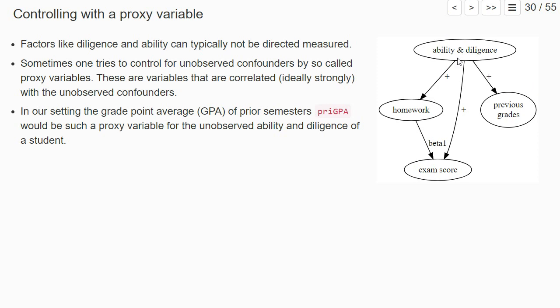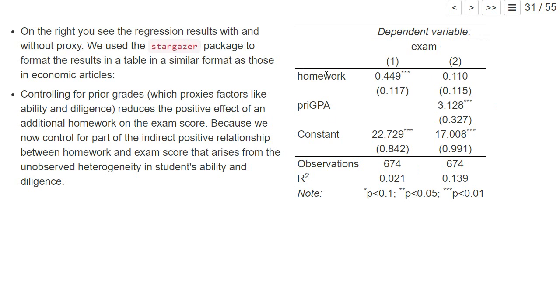On the right, you see the two regression results. The first regression is where we don't add any control variable, and the second regression is where we add the grade point average from prior semesters as a control variable.